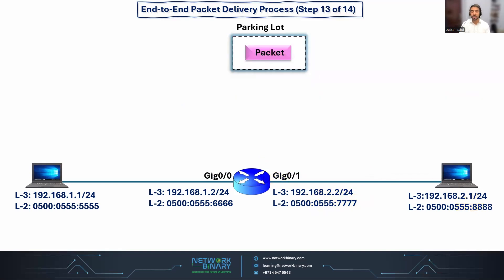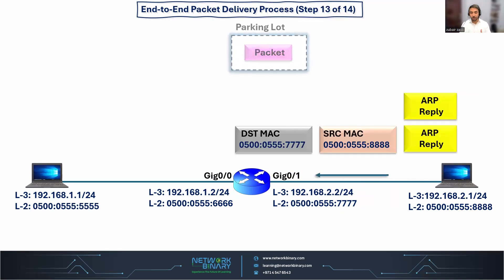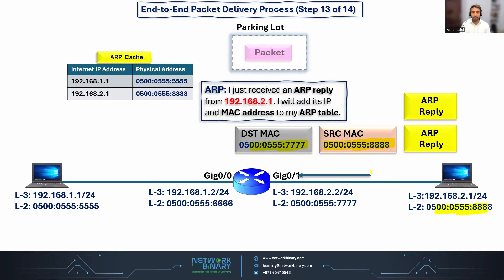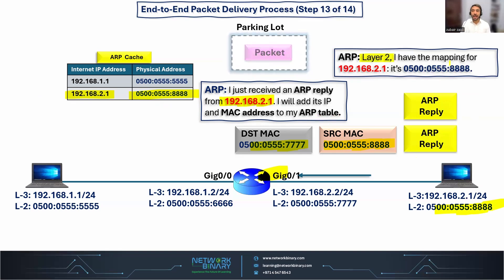The receiver PC receives the ARP request and sends an ARP reply with its MAC address — using its own interface MAC address as source and the router's MAC address as the unicast destination. The router receives the ARP reply and adds the mapping of 2.1 with the receiver PC's MAC address into the ARP cache table. ARP then contacts layer 2 of the router and says: I have the mapping for this IP address to its MAC address — now you can transmit the pending frame toward the final destination.